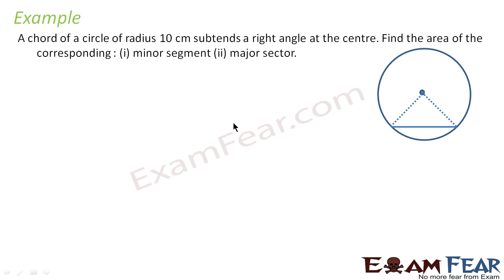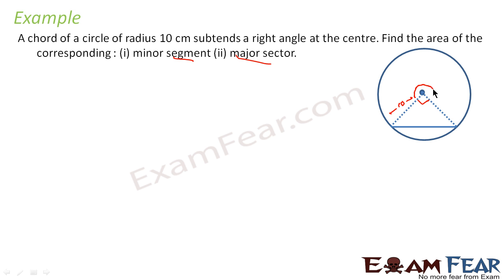Let's take another question. The question says: the chord of a circle of radius 10 centimeters subtends a right angle at the center. Find the area of the corresponding minor segment and the major sector. The radius is 10 and the angle is 90 degrees. Please note — we need the minor segment and the major sector. For the major sector, the remaining angle is 360 minus 90, which is 270 degrees.